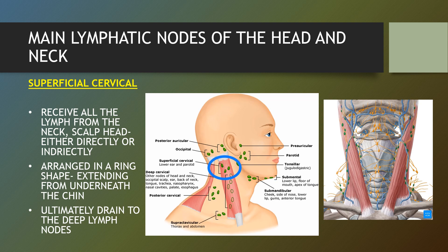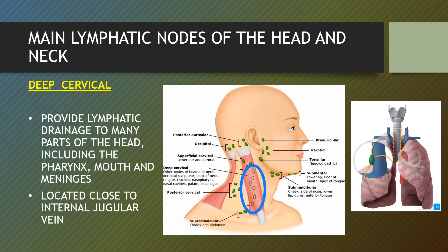The superficial cervical lymph nodes can be divided into superficial anterior lymph nodes and posterior lateral superficial cervical lymph nodes. The anterior nodes lie close to the anterior jugular vein and collect lymph from the superficial surface of the anterior neck. They receive all the lymph from the neck, scalp and head, either directly or indirectly, and are arranged in a ring shape extending from underneath the chin, ultimately draining to the deep lymph nodes. The deep cervical lymph nodes receive all the lymph from the head and neck, either directly or indirectly via the superficial lymph nodes, and are organised into a vertical chain located within close proximity to the internal jugular vein. They provide lymphatic drainage to many parts of the head including the pharynx, mouth and meninges.